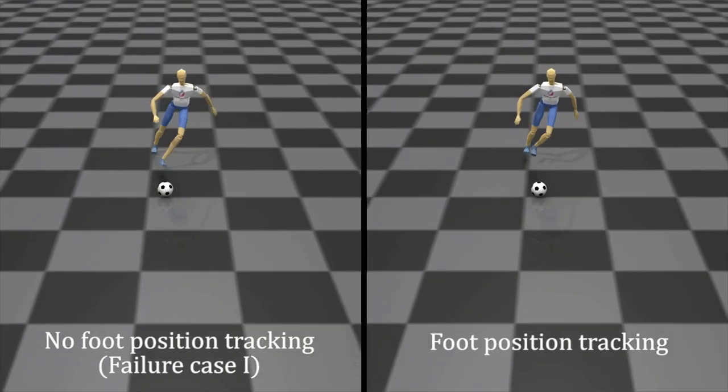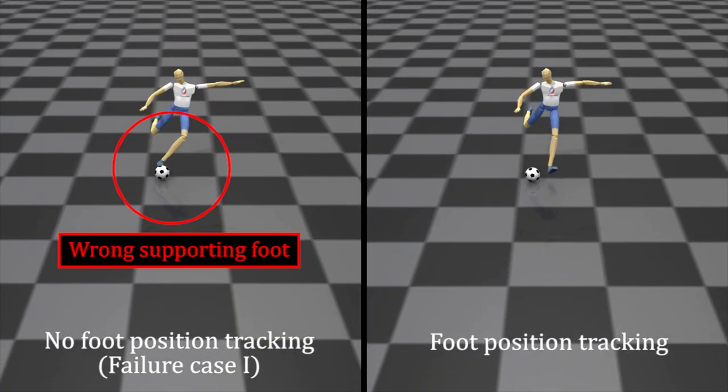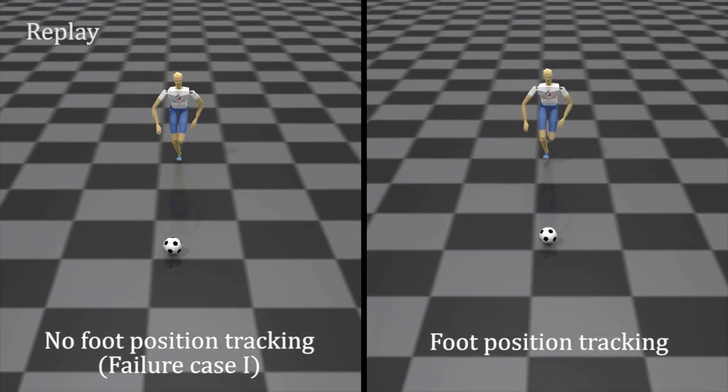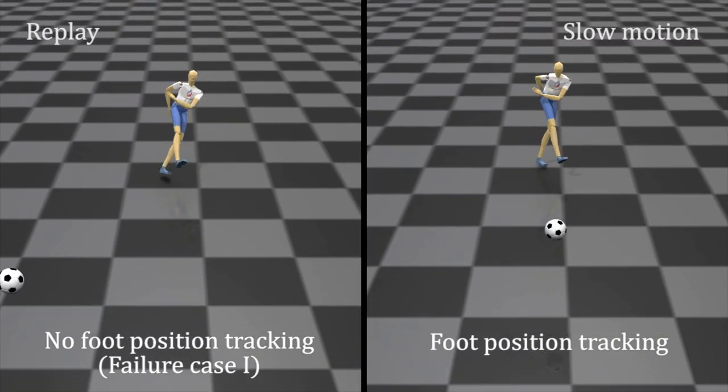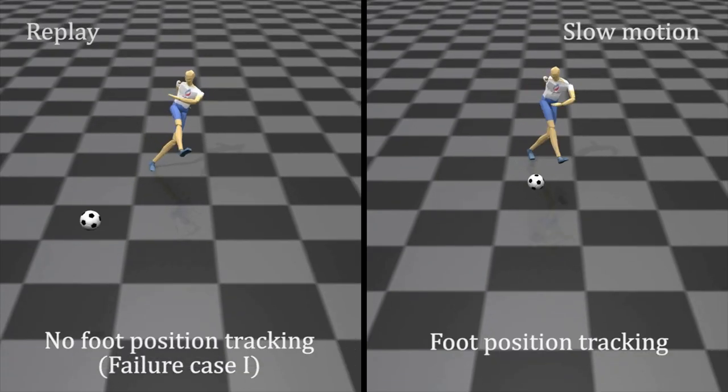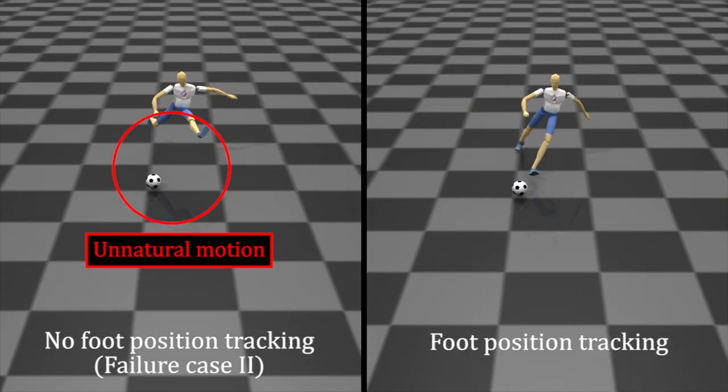Effect of the foot position tracking. Without the foot position tracking, the character plants its supporting foot at the wrong position or fails to plant it on the ground.